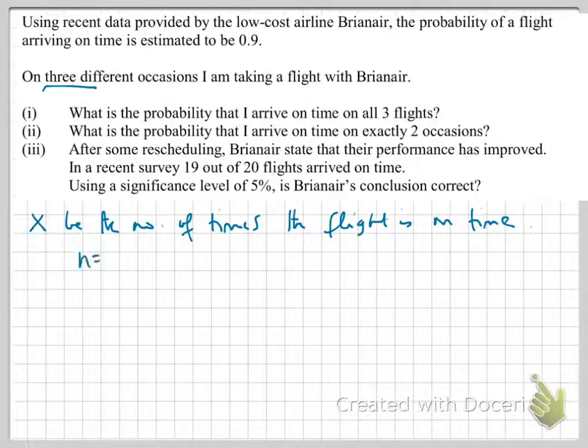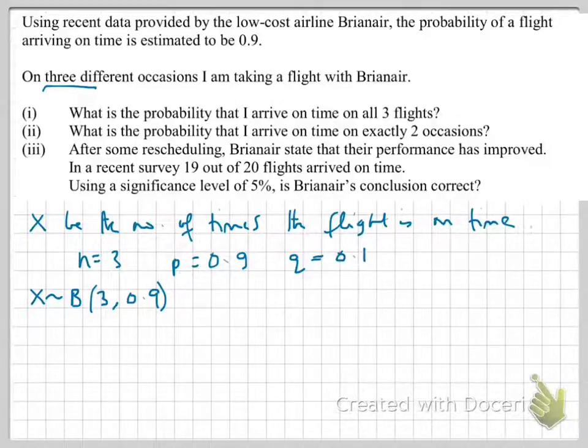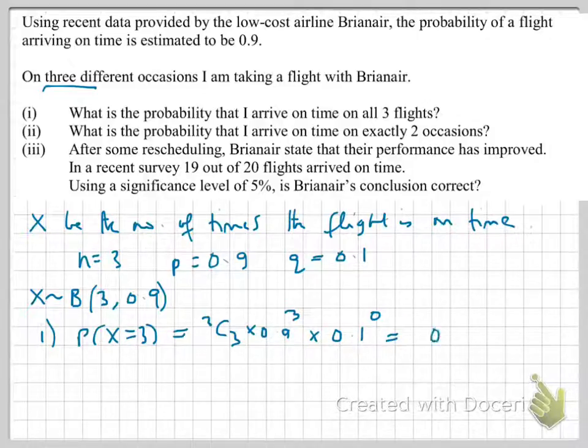We know n, the number of times that the flight is taken is three. p, the probability of success of it being on time, is 0.9. And therefore, q has to equal 0.1. Now, if we were to model this using our binomial distribution, we'd therefore have a variable x, which is binomially distributed, where n equals 3 and p equals 0.9. And so, to work out our first part, where x equals 3, we simply have 3 choose 3, 0.9 to the power of 3 times 0.1 to the power of 0. We can substitute our numbers in and that will give us 0.729.